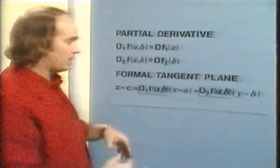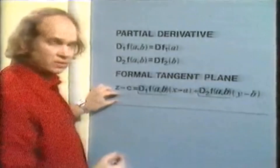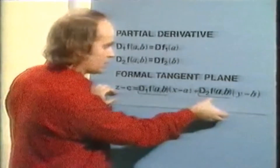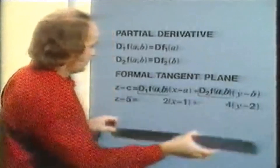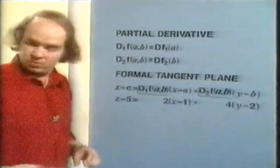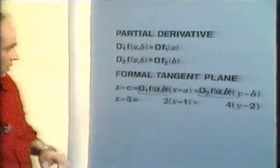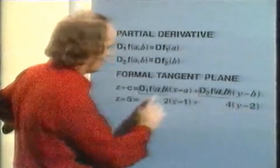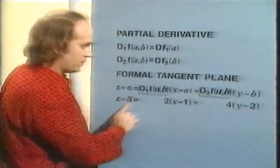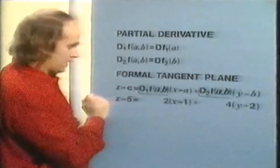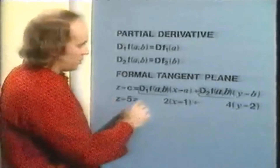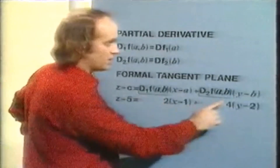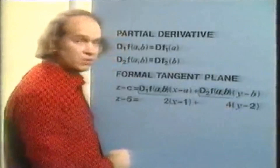For our particular example, x² + y², the formal tangent plane passes through the point (1, 2, 5) on the surface. We worked out the first partial derivative to be 2 and the second partial derivative to be 4, giving us the equation of the formal tangent plane.